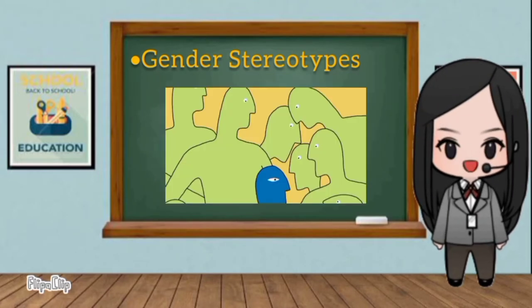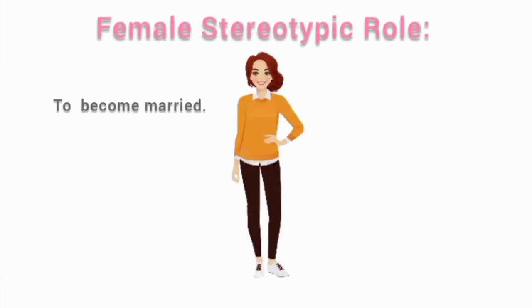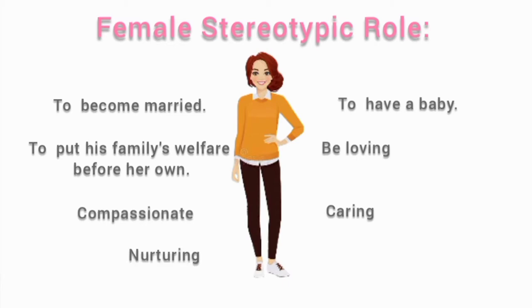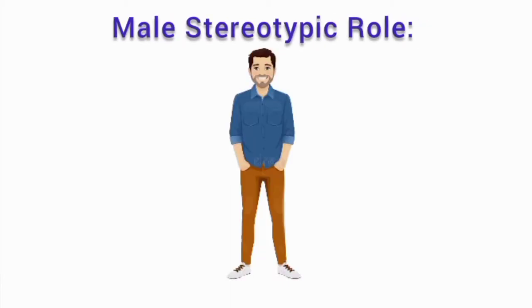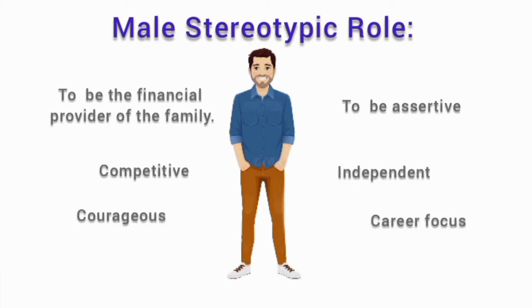Many people recognize the dangers of gender stereotyping, yet continue to make these types of generalizations. Traditionally, the female stereotypic role is to marry and have children. She is also to put her family's welfare before her own, be loving, compassionate, caring, nurturing, and sympathetic. While the male stereotypic role is to be the financial provider of the family. He is also to be assertive, competitive, independent, courageous, career focused, and hold his emotions in check.